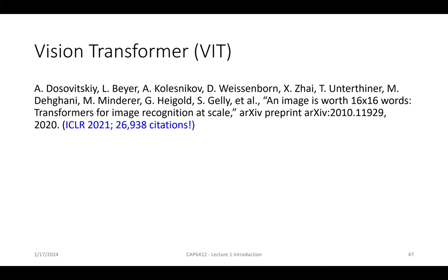This started with NLP and the famous paper 'Attention Is All You Need.' It took a few years to use a transformer in computer vision because it was originally used for NLP, for text and language. The first paper applying transformers to vision was in 2020, called 'An Image is Worth 16x16 Words,' known as ViT (Vision Transformer). It's a very important paper with a lot of citations.